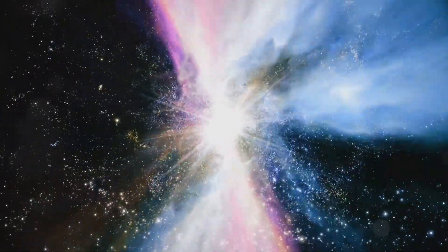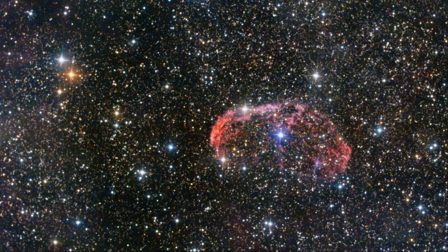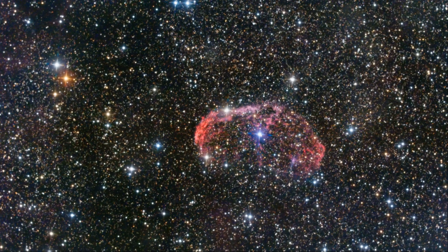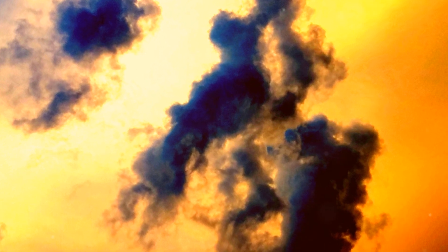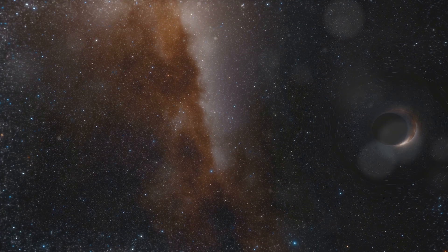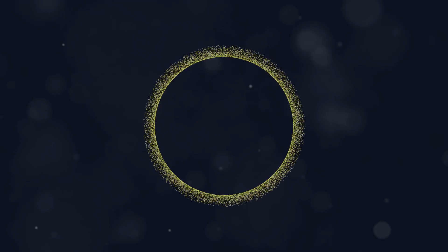This collapse happens incredibly fast. In a fraction of a second, the core implodes, triggering a shock wave that rips the star apart. This is the supernova—a cosmic light show visible across vast distances. What remains after this violent explosion depends on the mass of the core.